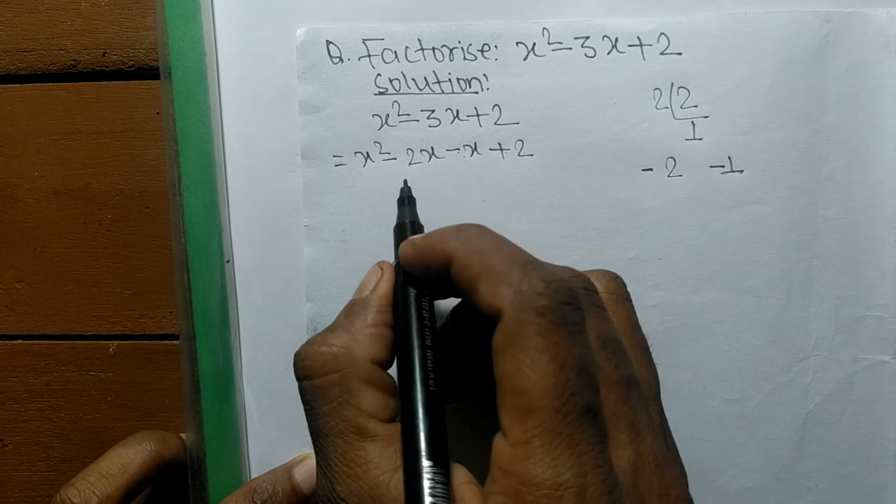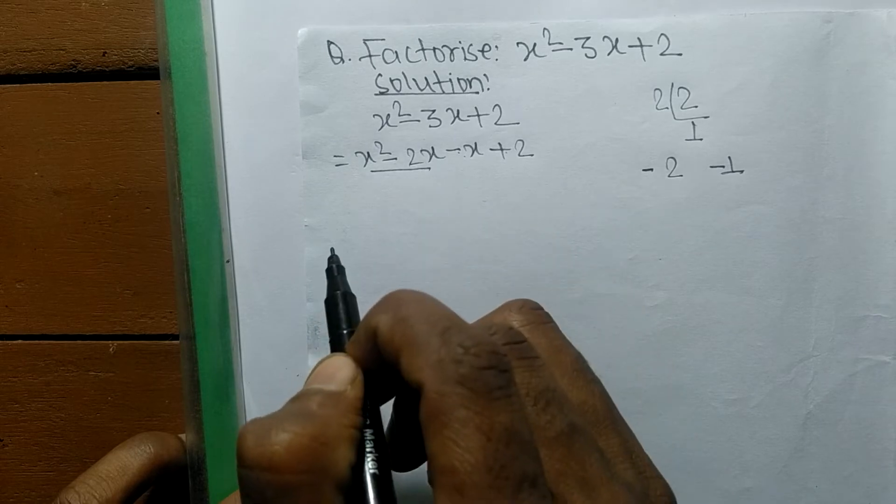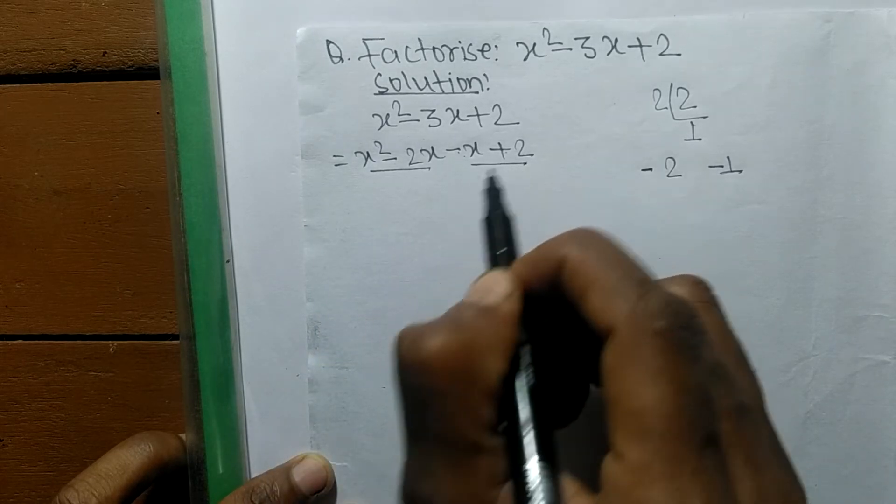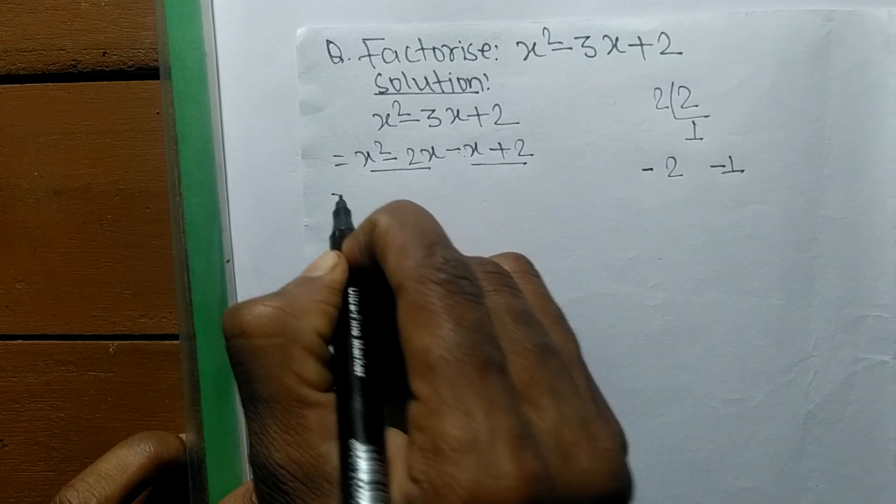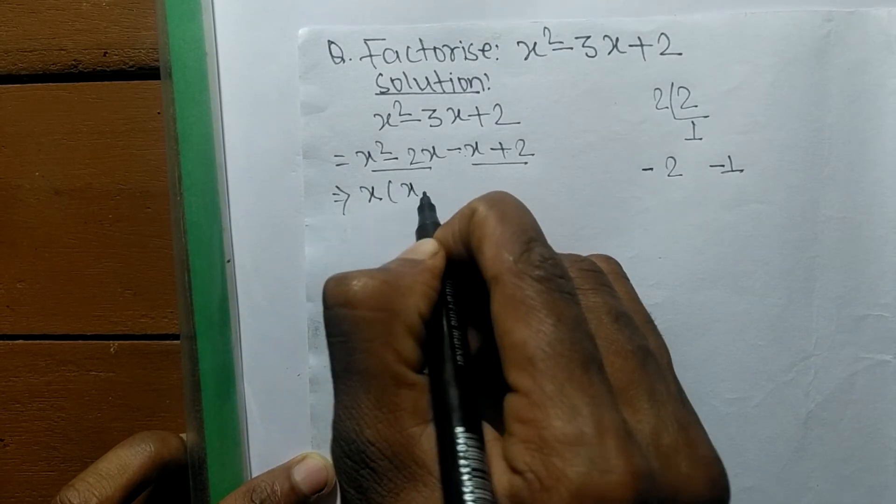So now we have to separate it into two pairs. These both are the first pair, and these both are the second pair. In the first pair the common factor is x, so the remaining is x minus 2.